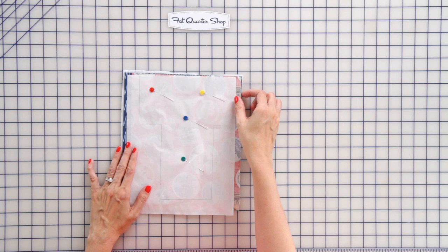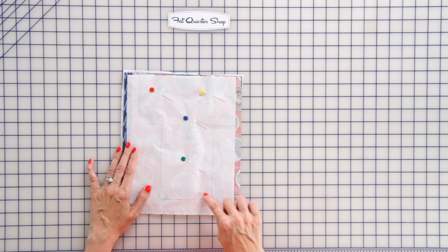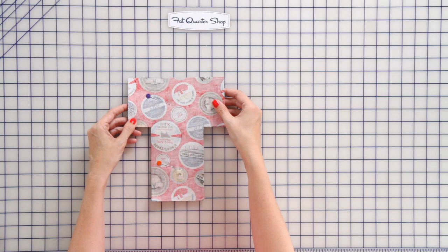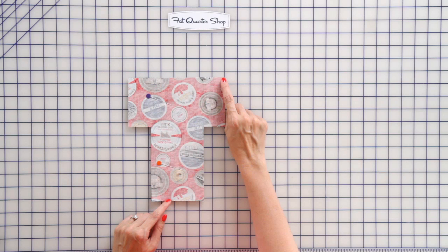Now we're going to put some pins in and then just cut all the way around the template. You want to make sure your fabric and your batting are slightly outside of your template on all sides. It's going to look like this.